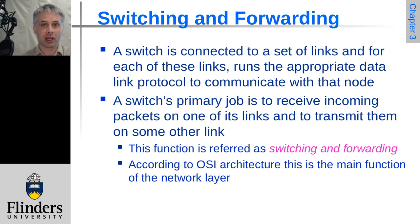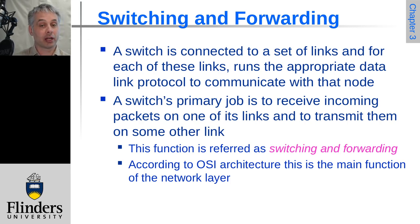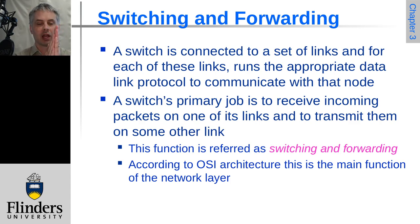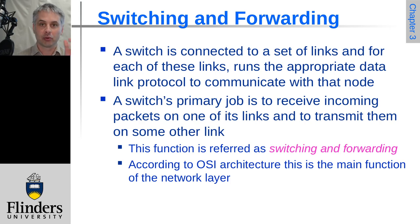Often a frame will come in one port and go out another port. This is called switching and forwarding. Switching is deciding which way it needs to go — by analogy to rail networks where you have a train line that forks off, you have a switch that changes direction. Here in Australia and the UK we call them points, but it's the same idea. Forwarding is the actual act of moving the frame.